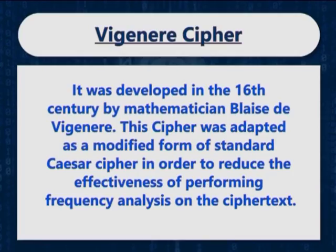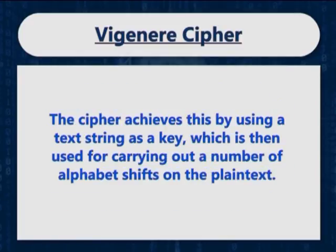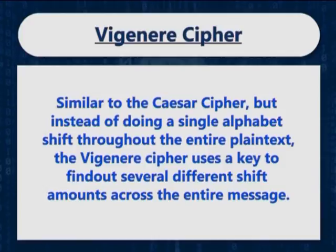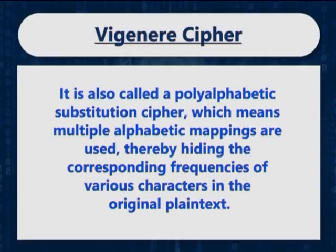The next cipher is Wigney cipher. The Wigney cipher was developed in the 16th century by mathematician Blaise D. Wigney. The Wigney cipher was adapted as a modified form of the standard Caesar cipher in order to reduce the effectiveness of performing frequency analysis on the ciphertext. The cipher achieves this by using a text string as a key, which is then reused for carrying out a number of alphabet shifts on the plaintext. The Wigney cipher uses a key to find out several different shift amounts across the entire message.